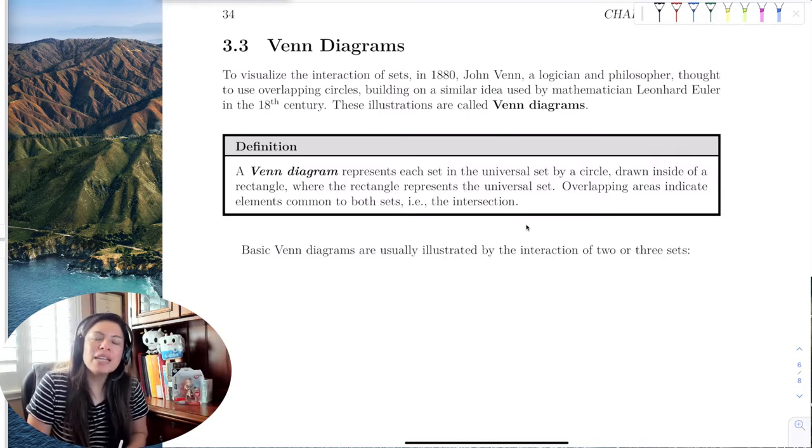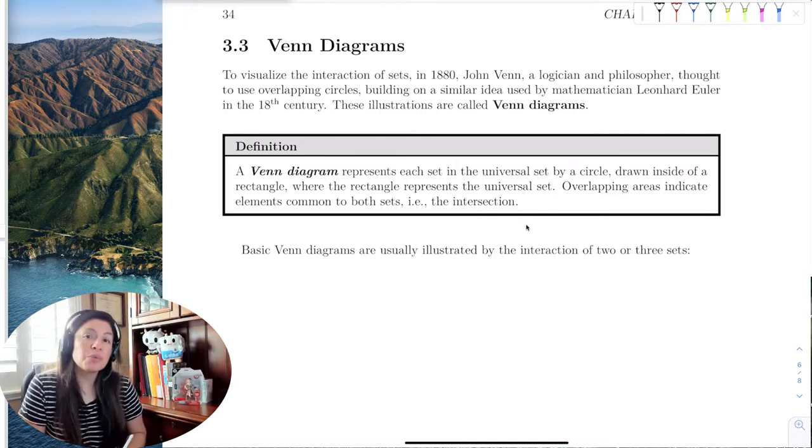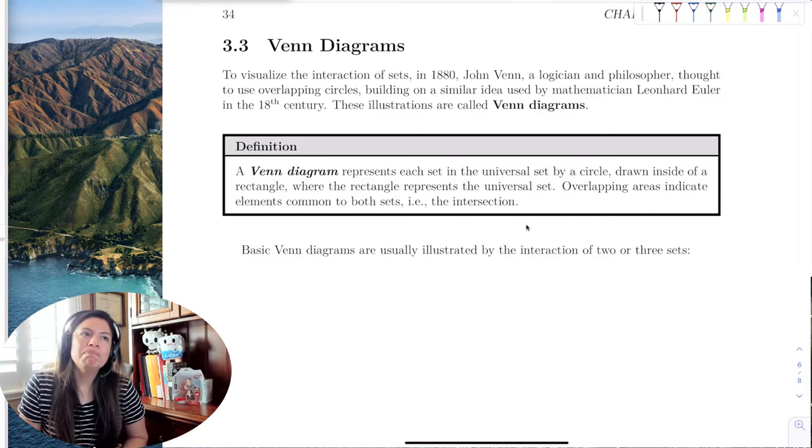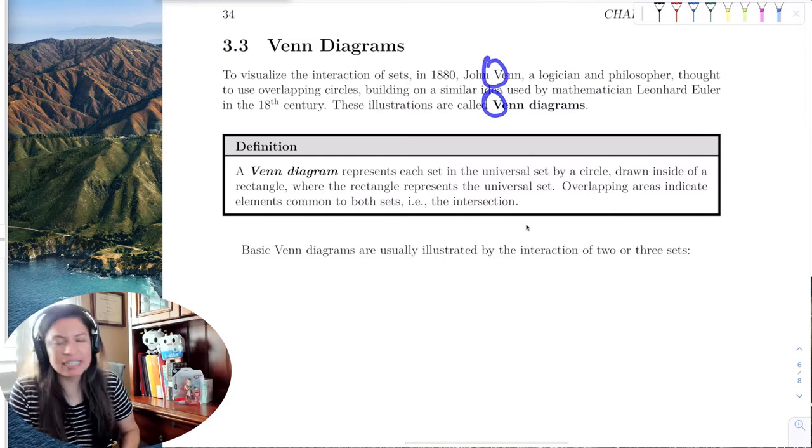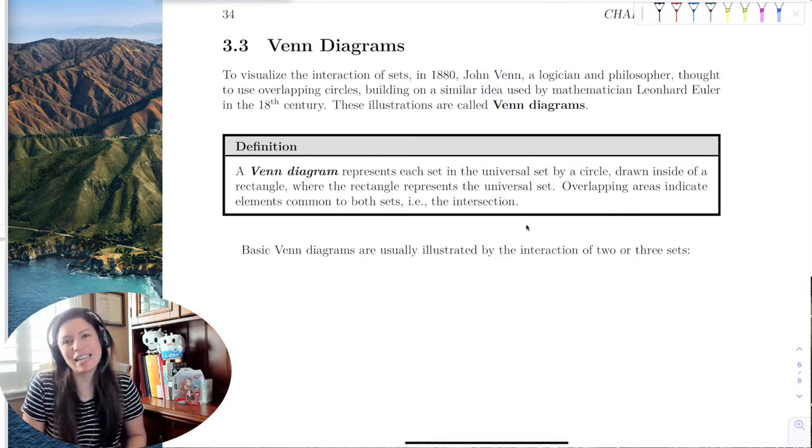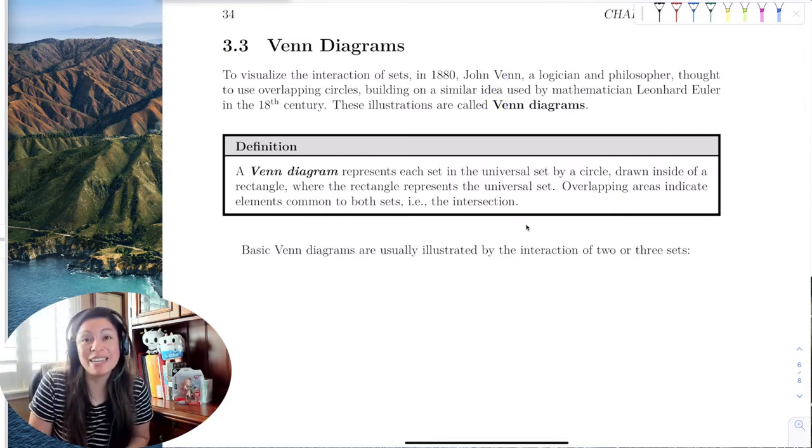And in fact, Euler was kind of the first with Euler diagrams, which we're going to do in the next chapter with logic. But Venn diagrams, the word Venn itself will be capitalized, and that's not for fanciness, that's just because that's the last name of the person who invented Venn diagrams.